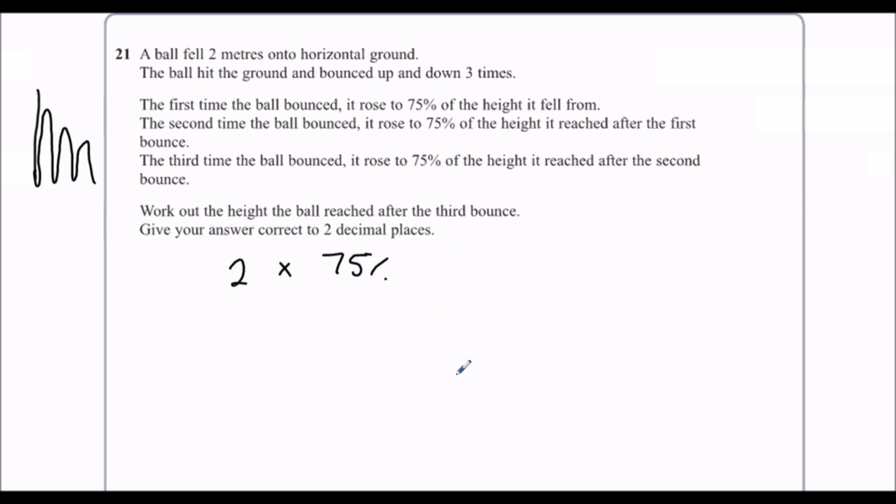You get the answer and do 75% again. We don't actually have to do it that way because the compound interest or depreciation formula for repeated percentage change, if we're doing 75% three times.